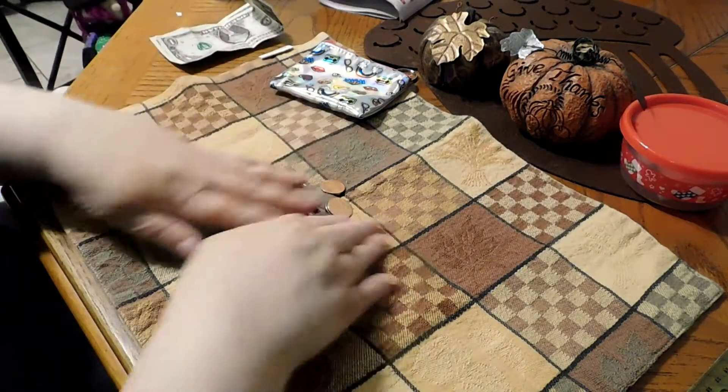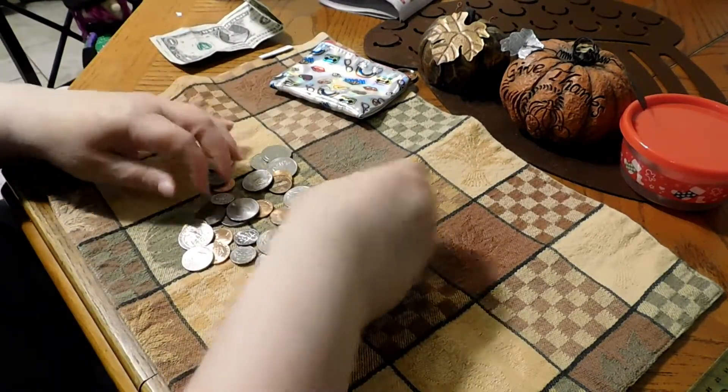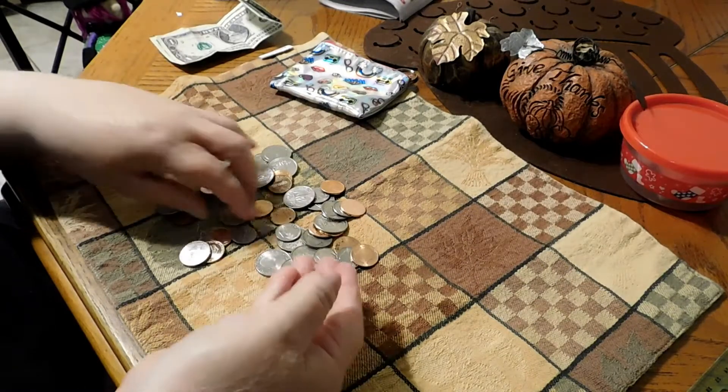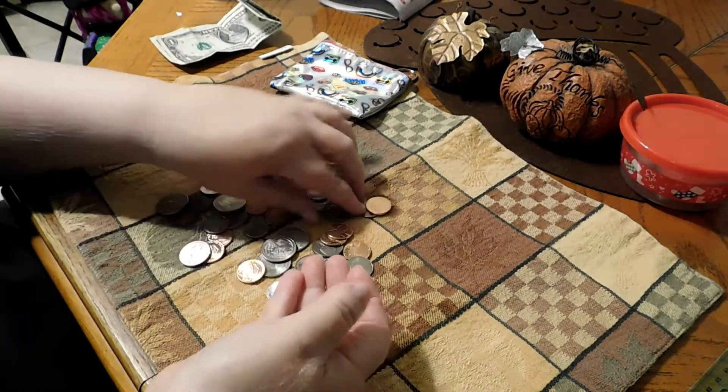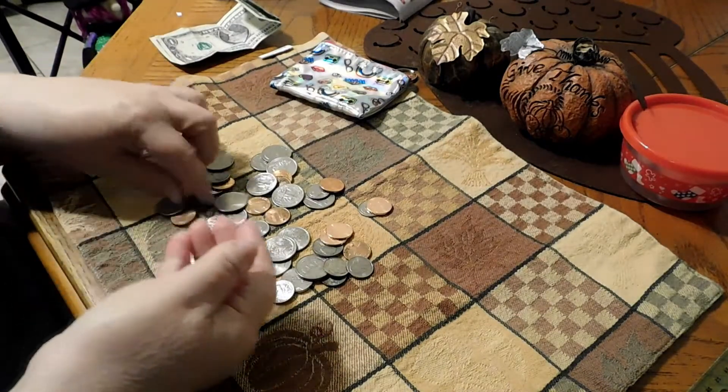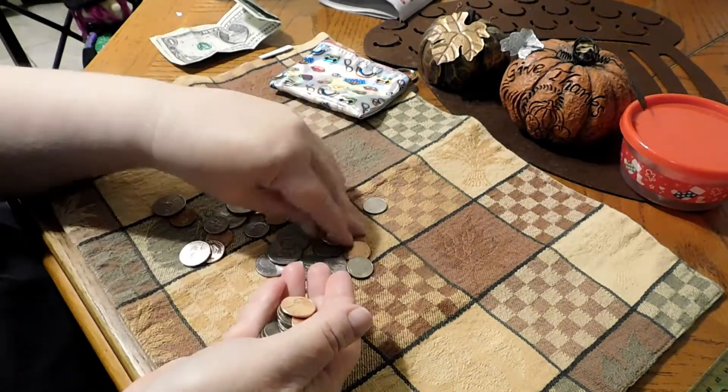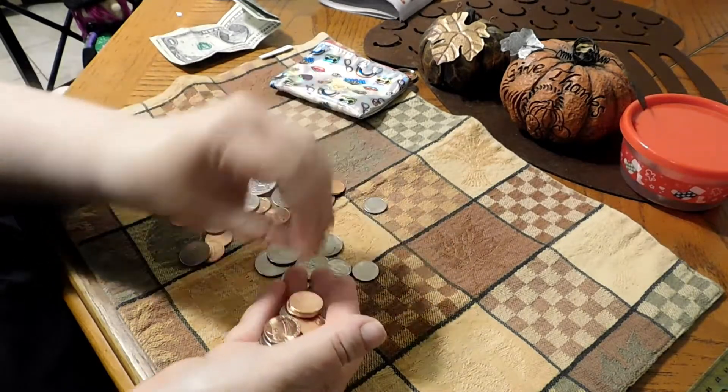We'll put that off to the side and we'll do 75, 85, 90, 95, 96, 97, 98, 99, $1. Okay, now we'll go back into my little coin purse.